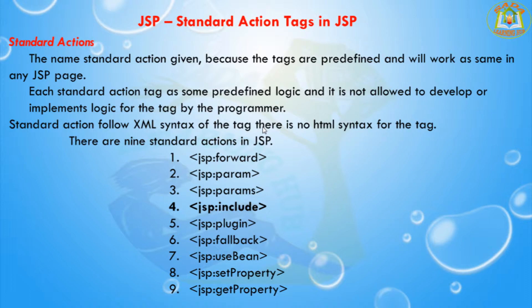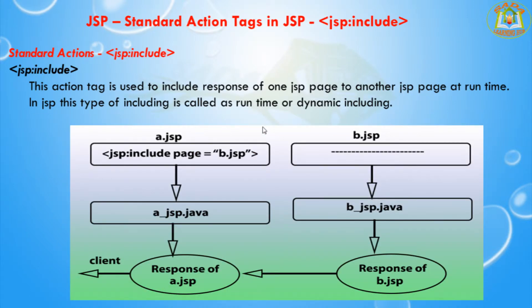This is the second video and I am going to explain the JSP colon include tag. The JSP colon include action tag is used to include the response of one JSP page into another JSP page at runtime. For example, I am creating a.jsp, and in a.jsp I am including the response of b.jsp. Whenever the response of b.jsp is received, it is included into a.jsp.